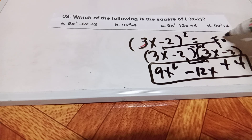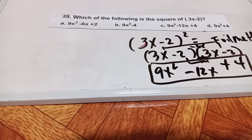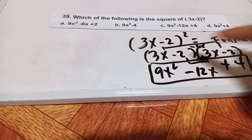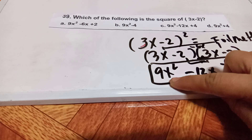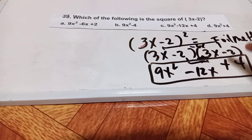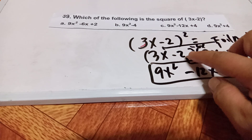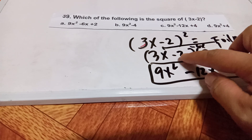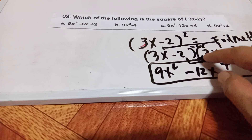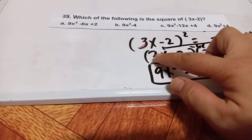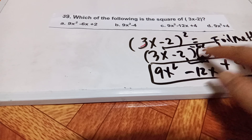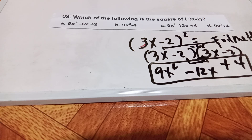All you have to do is use the FOIL method. 3x times 3x is 9x squared. Negative 2 times negative 2 is positive 4. Negative 2 times 3x will be negative 6x. And 3x times negative 2 will become negative 6x. Combining the like terms gives negative 12x. So the answer is letter C.